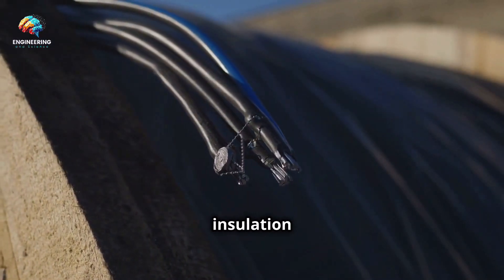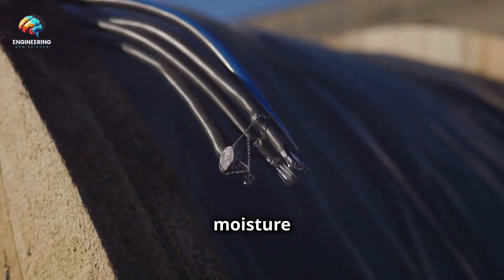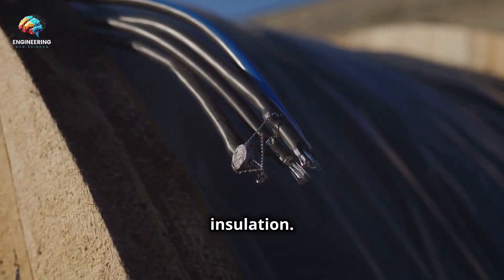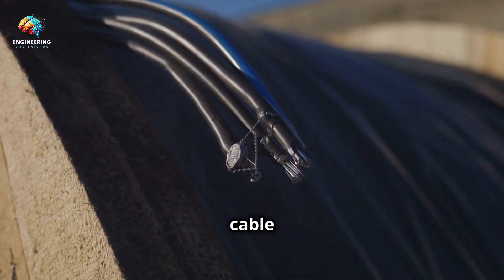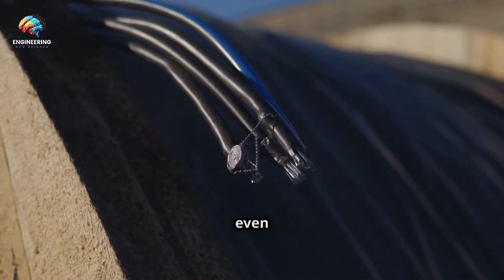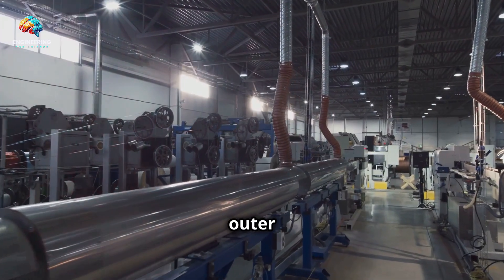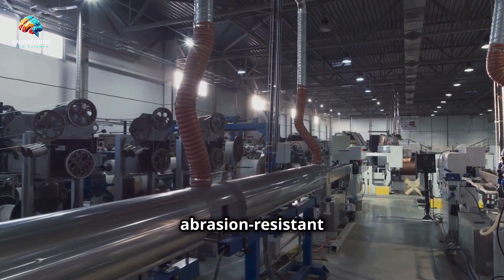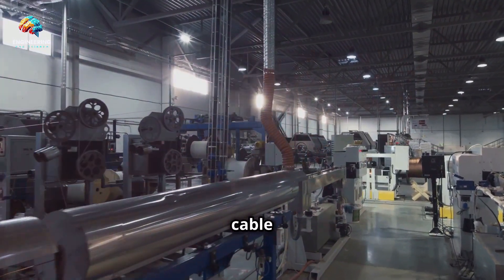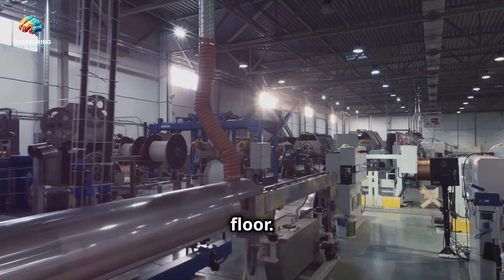Polyethylene insulation acts as a further barrier against moisture and provides electrical insulation. This layer ensures that the cable remains operational even in the most challenging conditions. Finally, a protective outer sheath, often made of a tough abrasion-resistant plastic, shields the cable from the physical hazards of the ocean floor. This outer layer is the first line of defence against external threats.